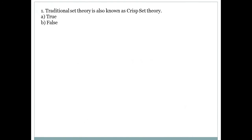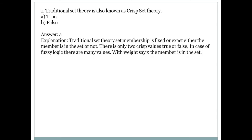First question: Traditional set theory is also known as crisp set theory. Answer is A, that is true. Traditional set theory is also called as crisp set theory. In crisp set theory the membership is either fixed or exact. There are only two crisp values, that is true or false, 0 and 1. In case of fuzzy logic there are many values. In fuzzy logic the values are between 0 and 1.